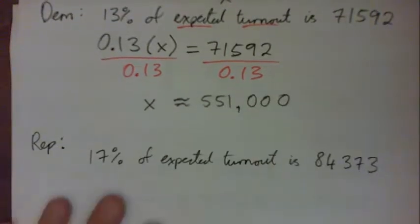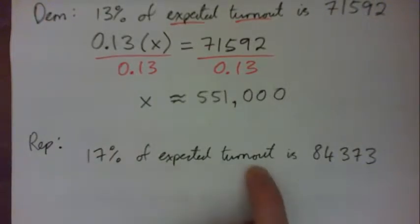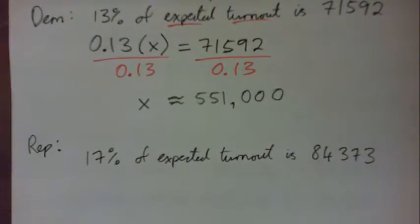Are we all okay with this sentence, that 17% of the expected turnout in the Republican primary is 84,373? Did we all get that? That's the key. Once you've got that, then you turn that into an equation and solve the equation.